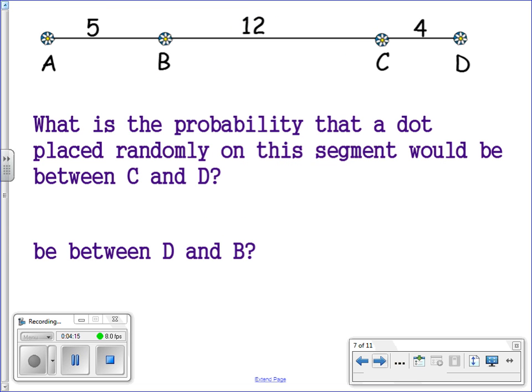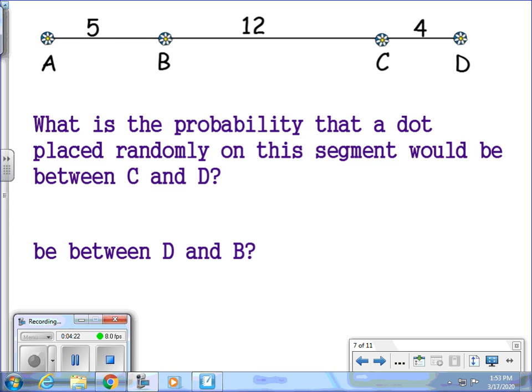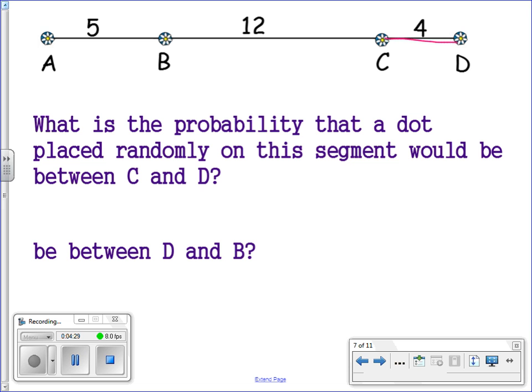Next, what is the probability that a dot placed randomly on this segment would be between C and D? Well, first, let's look at the distance between C and D. And our distance is 4. So that's going to be in the numerator. We're going to divide that by the total distance between A and D. So we have to add up 5, 12, and 4 together. And when you do that, you get 21. And that's our answer.